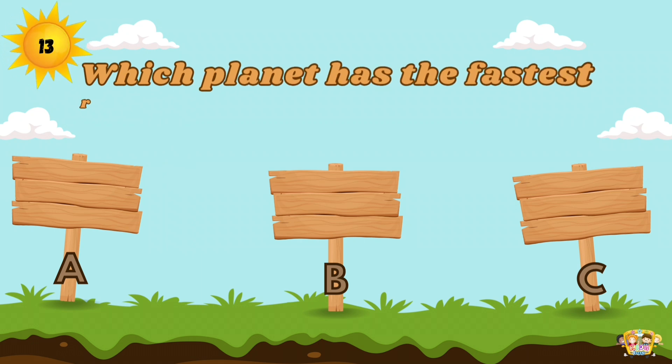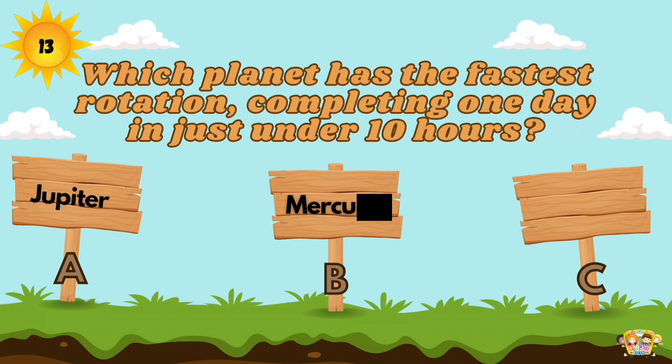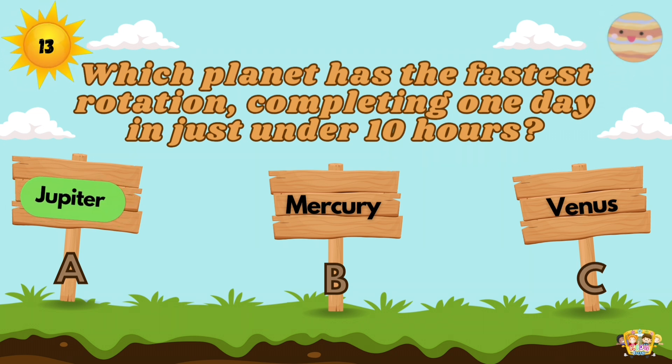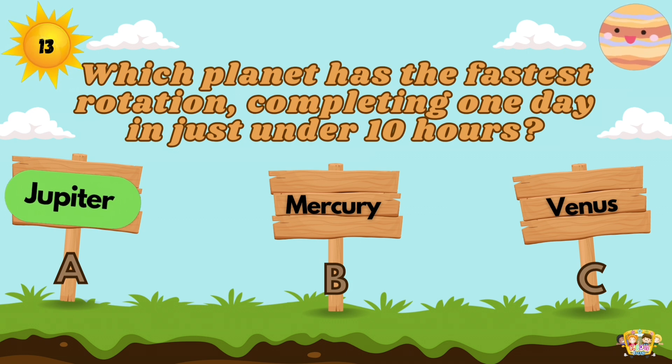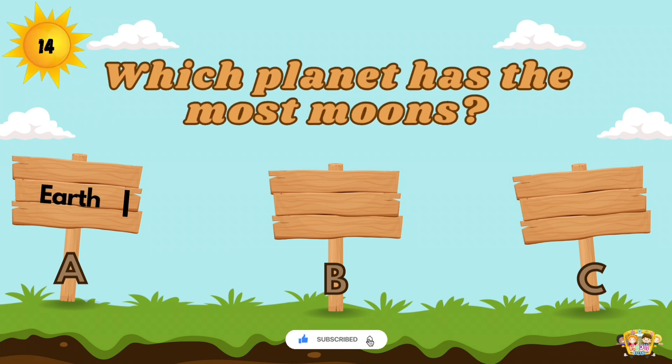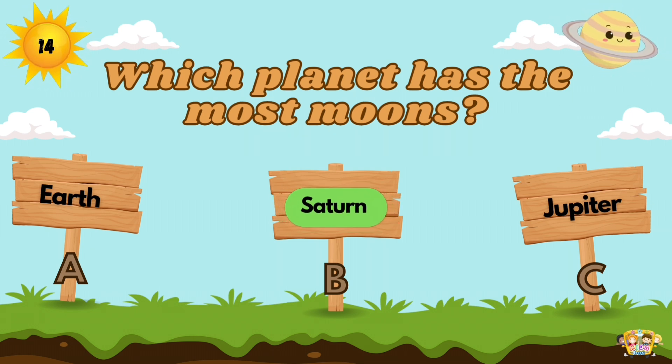Which planet has the fastest rotation, completing one day in just under 10 hours? Jupiter is the fastest spinning planet in our solar system. Which planet has the most moons? Saturn with a staggering 146 confirmed so far.